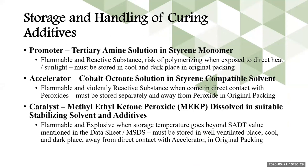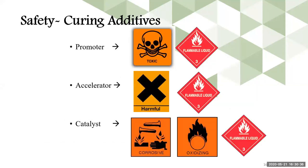Apart from resin, you are also using curing additives — typically promoter, accelerator, and catalyst. Each is defined with its hazard symbols: promoter is typically very toxic and a flammable liquid; accelerator is harmful and flammable; catalyst (MEKP) is corrosive, oxidizing — also known as explosive in nature — and flammable.